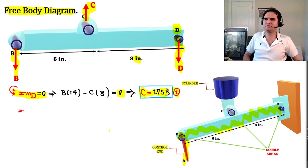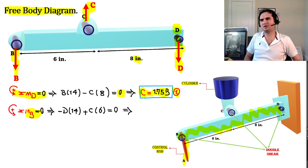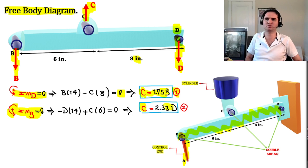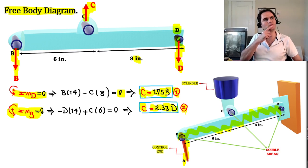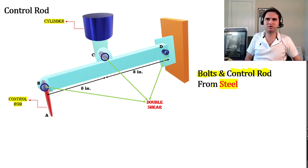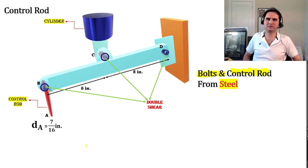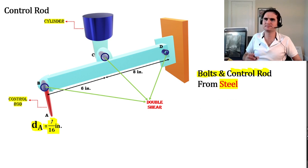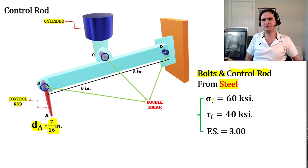Summing moments about point B gives Equation 2: F_D = 2.33 × T. So we have two equilibrium equations. All bolts and the control rod are made from steel.